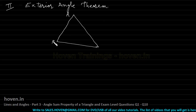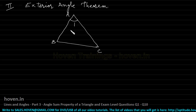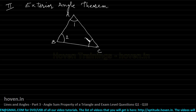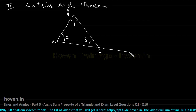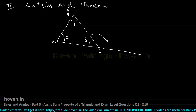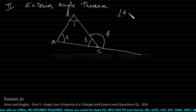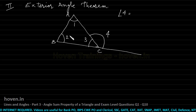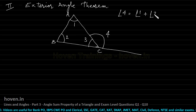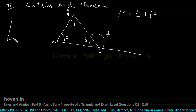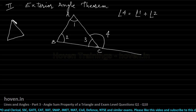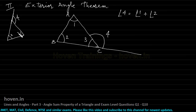Suppose this is triangle ABC, and this is angle 1, this is angle 2, this is angle 3. Let us suppose we produce the third side — extend this side outwards — and let the exterior angle be angle 4. The exterior angle theorem states that angle 4 is equal to the sum of the other two opposite angles. If we extend this side, then angle 4 will be equal to the sum of angle 2 and angle 3.